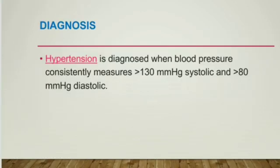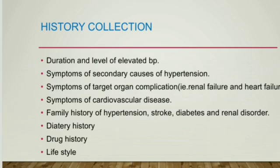Diagnosis of hypertension: when blood pressure is constantly measured above 140 mmHg systolic and above 80 mmHg diastolic, it is diagnosed as hypertension. Blood pressure is measured using a sphygmomanometer. History collection includes the duration and level of elevated blood pressure.